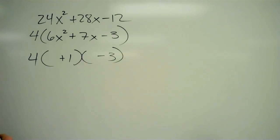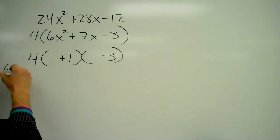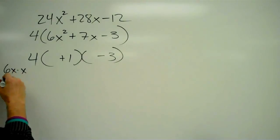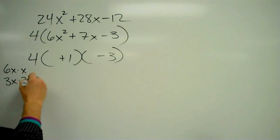And let's see. 6x squared, that can be either 6x times x, or it can be 3x times 2x.